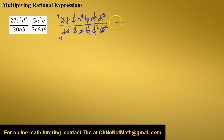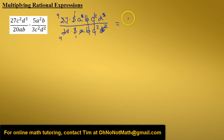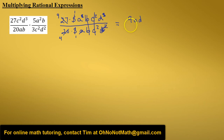So our final answer is 9ad in the numerator over 4 in the denominator — 9ad over 4.